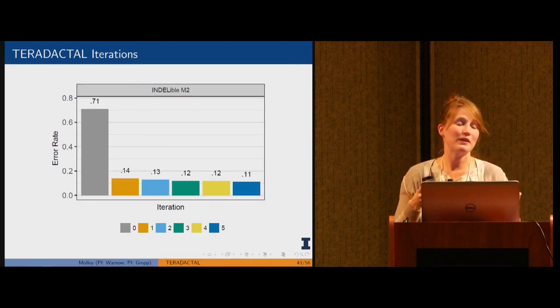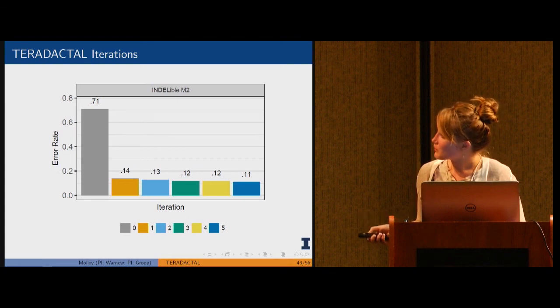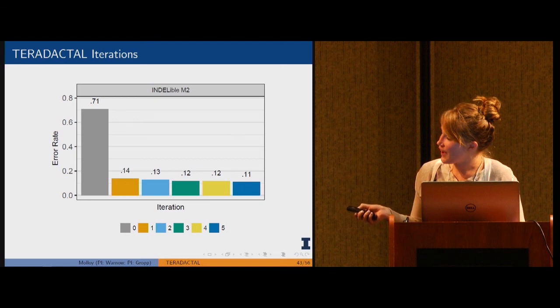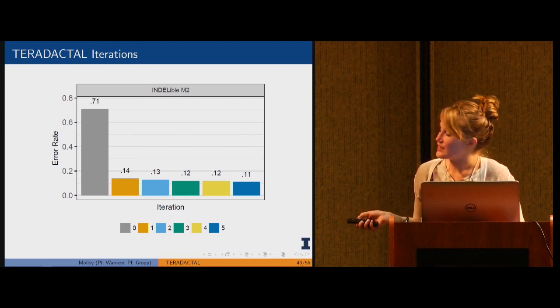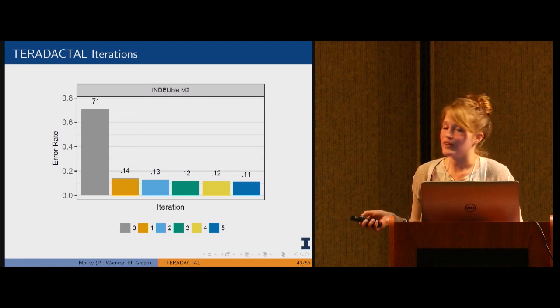We're basically showing that if we come up with a terrible starting tree in a method that's very fast and that you wouldn't want to use in practice, the tree has 71 percent error. In the first iteration of pterodactyl, you drop to 14 percent error and then it slowly drops down to 11 percent error. You can give pterodactyl a bad starting tree and it will make it a lot better, actually fairly rapidly.